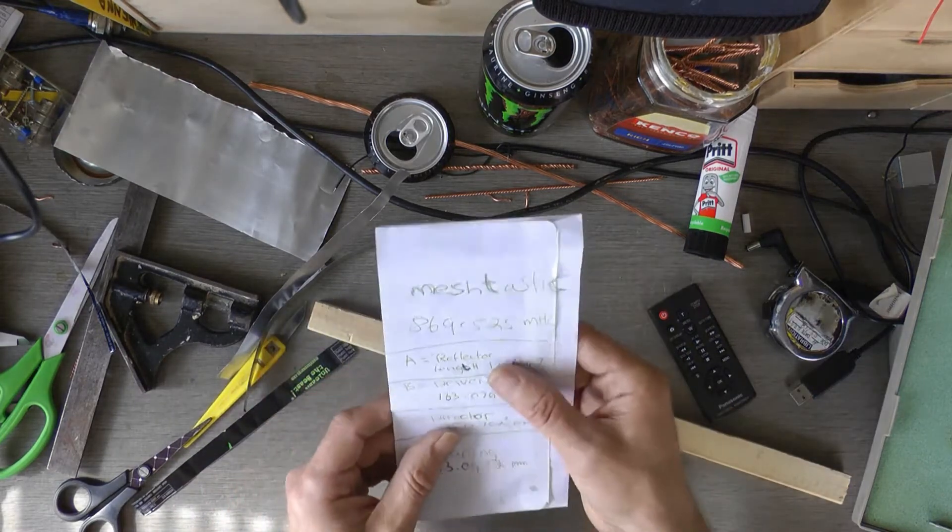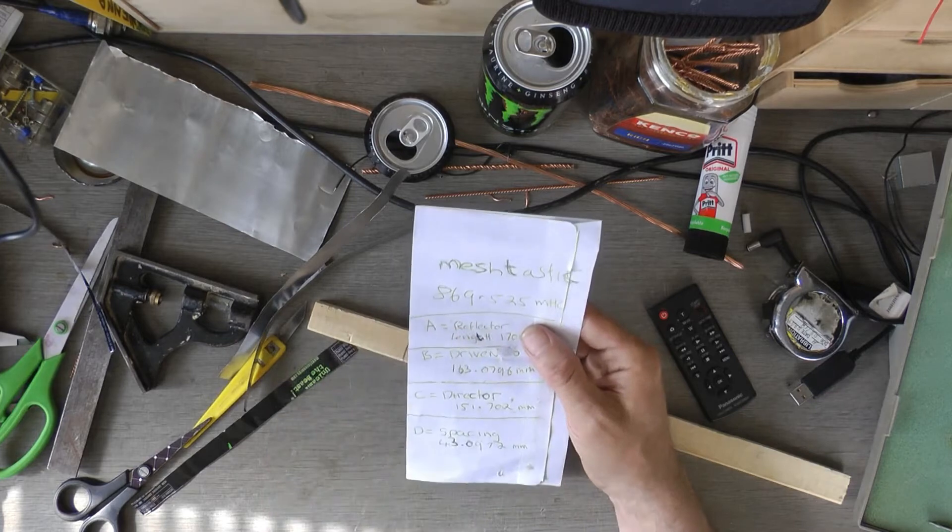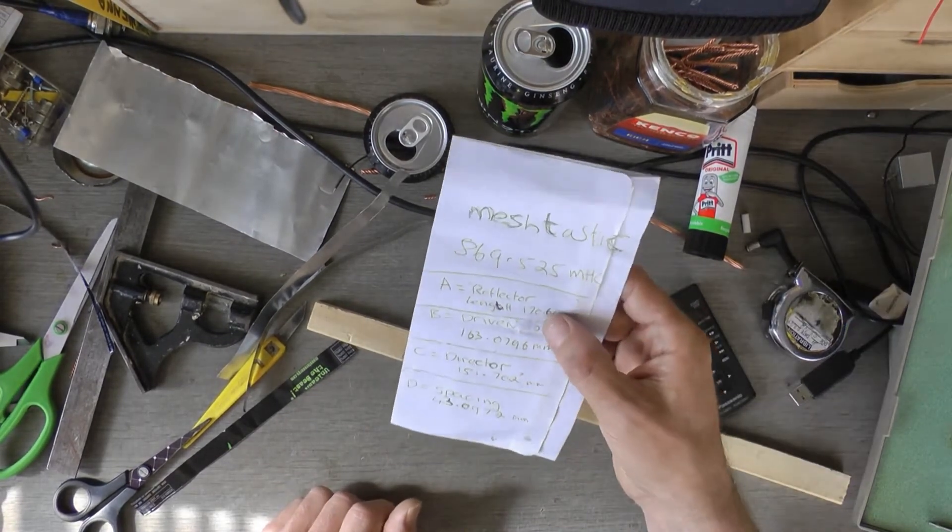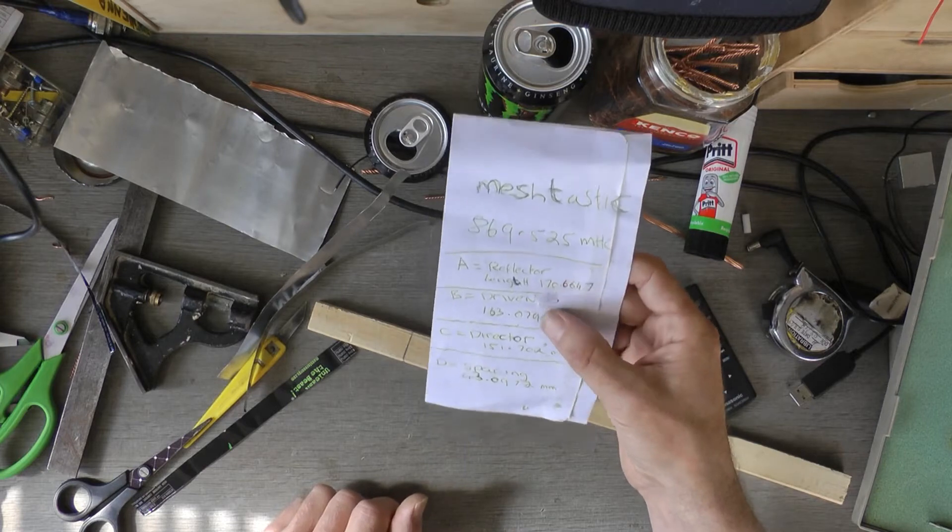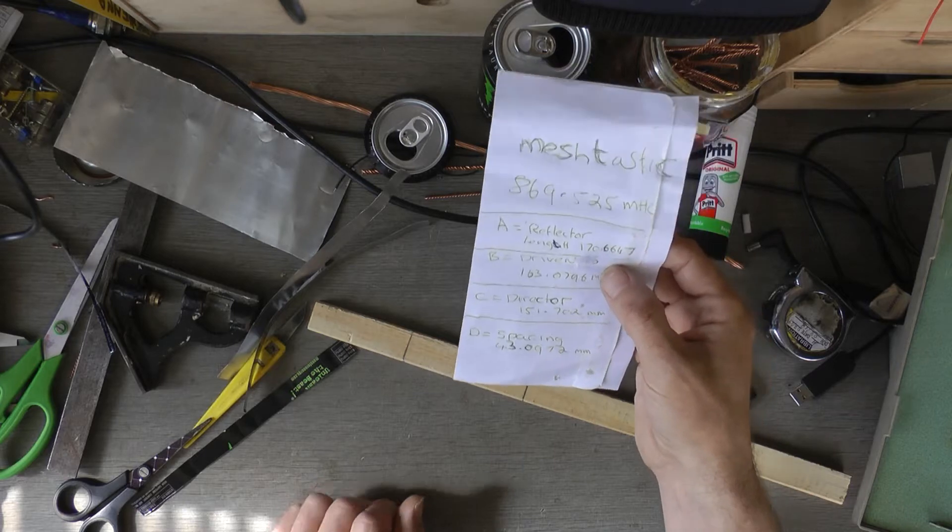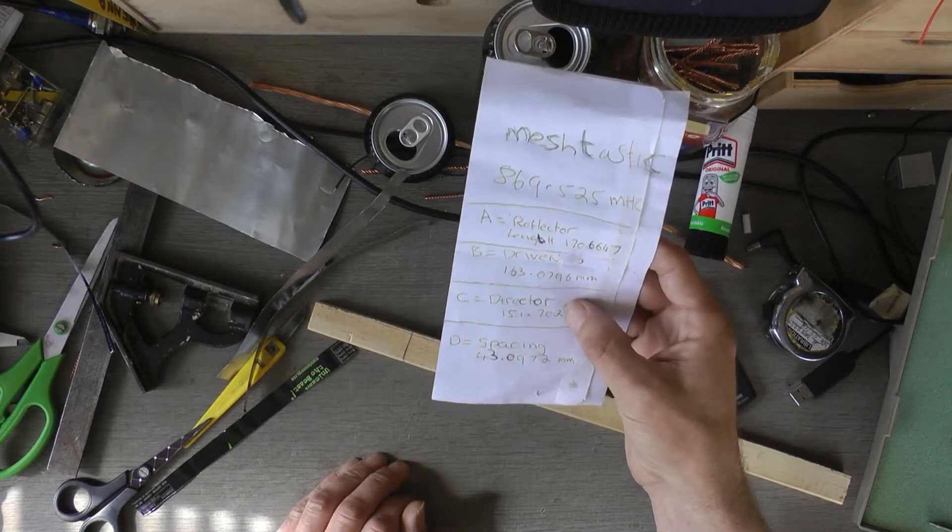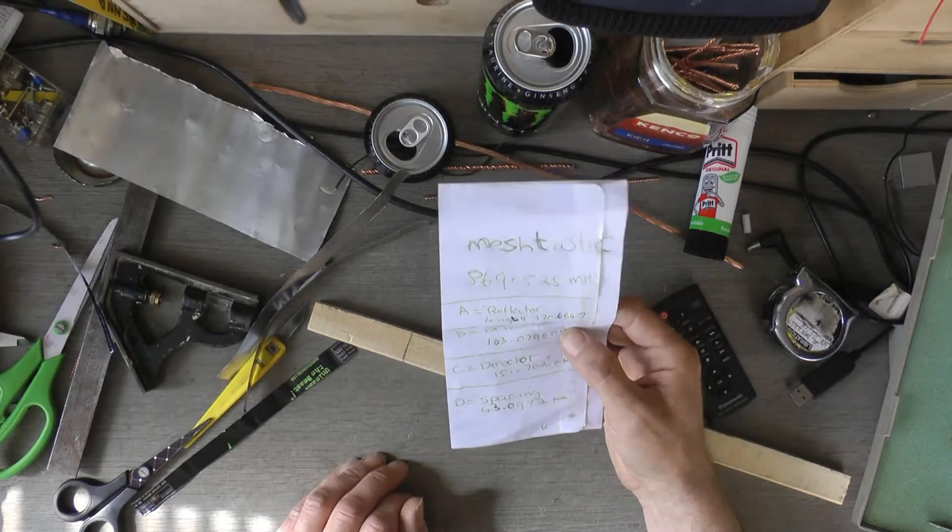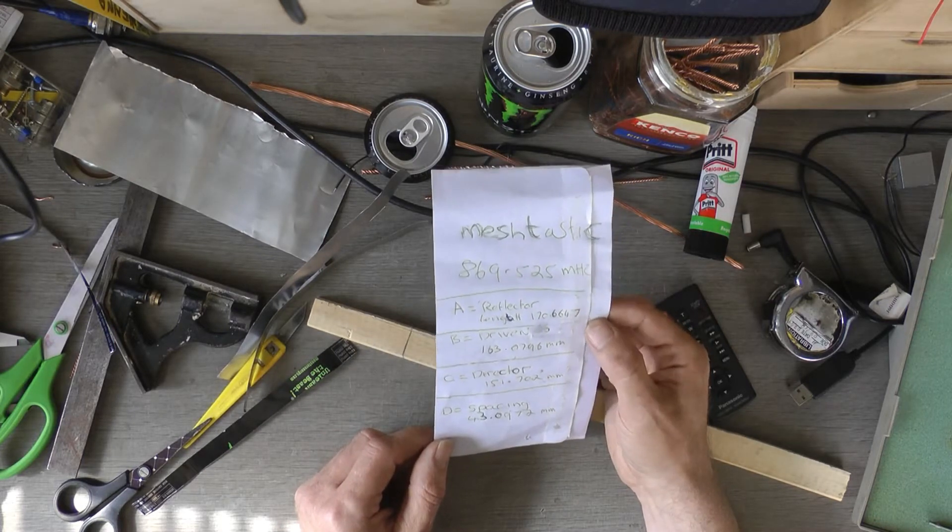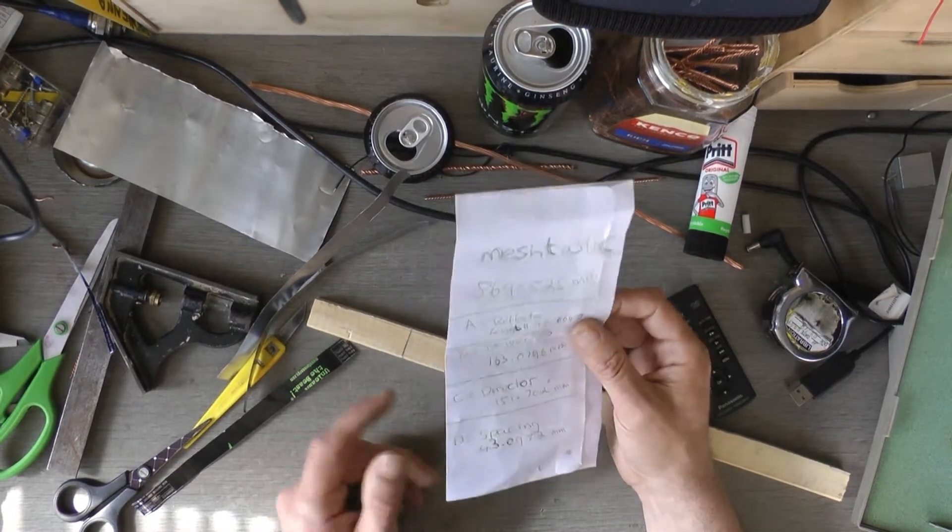So in order to do that I've got to use the calculator. And it's giving me a reflector length of 170.6mm, the driven element 163.07mm, and the director 151.702mm. Obviously it's going to need tuning to trim in.